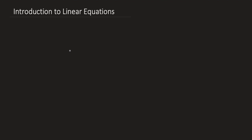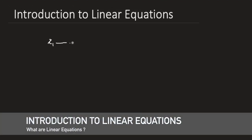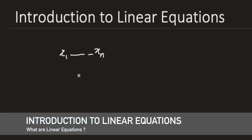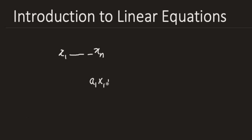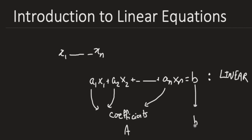So without further ado, let's get started by introducing you to linear equations. A linear equation in n unknowns, x1 down to xn, is an equation of the following form: a1*x1 plus a2*x2 down to an*xn equal to b. The a's and b are given — a1 down to an are coefficients that will form the coefficient matrix A, and b will form the vector b.